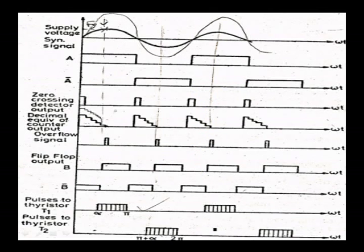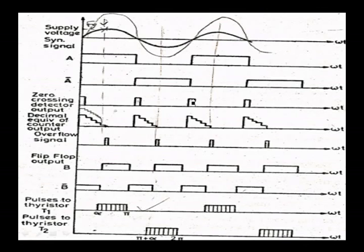Looking at the waveforms: the supply voltage is shown and we obtain A and A-bar. A is obtained for the positive half cycle and A-bar during the negative half cycle. Below this is the zero crossing detector output. The ZCD gives output whenever the supply voltage crosses zero.